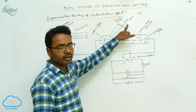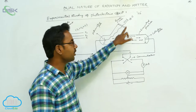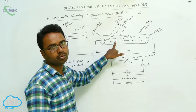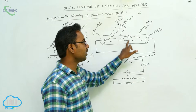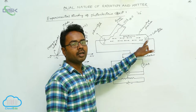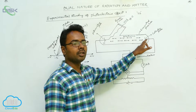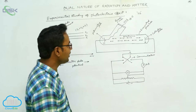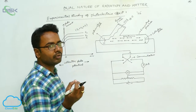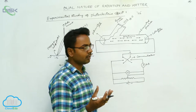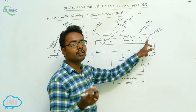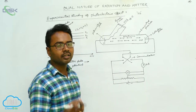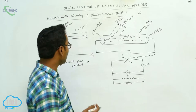When the frequency of incident light is greater than the threshold frequency, all electrons emitted from the metal surface have some kinetic energy. Because of their kinetic energy, these electrons reach the collector plate and penetrate into it, flowing in the external circuit and causing photocurrent. This current is minimum because only a few electrons reach the collector plate when it has zero potential.